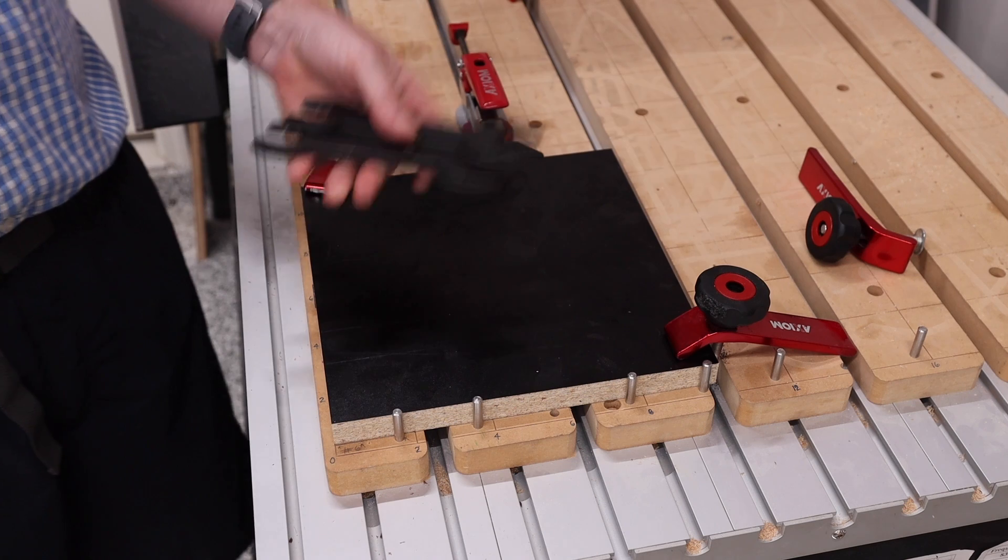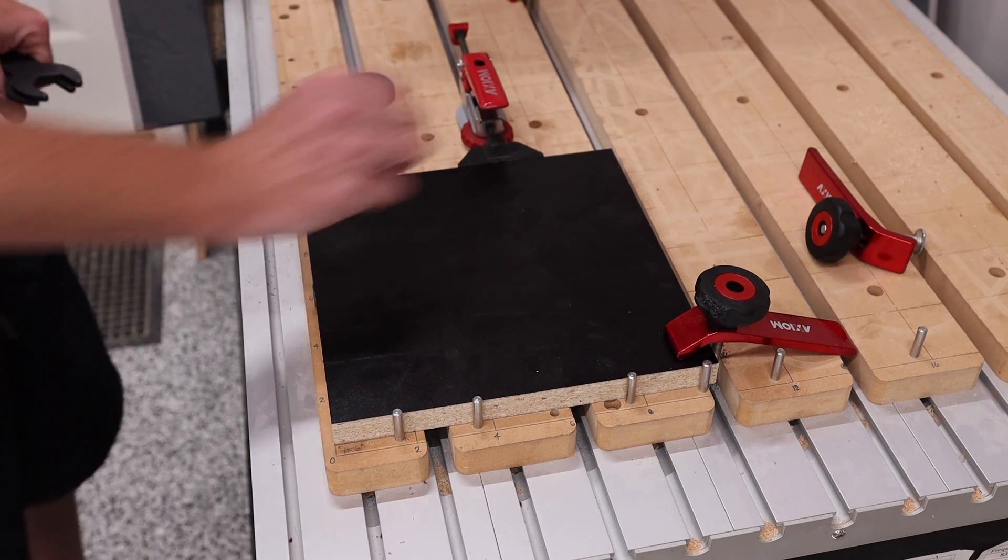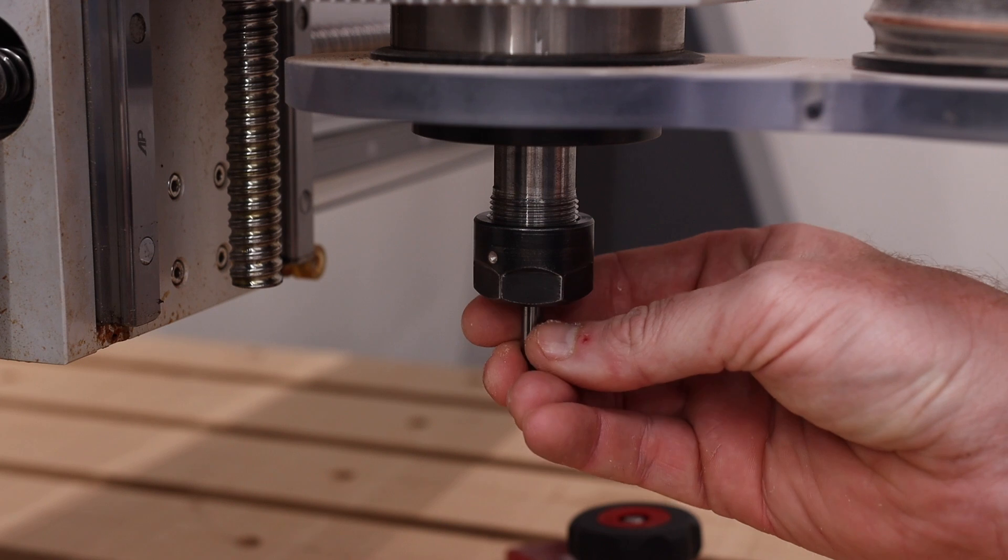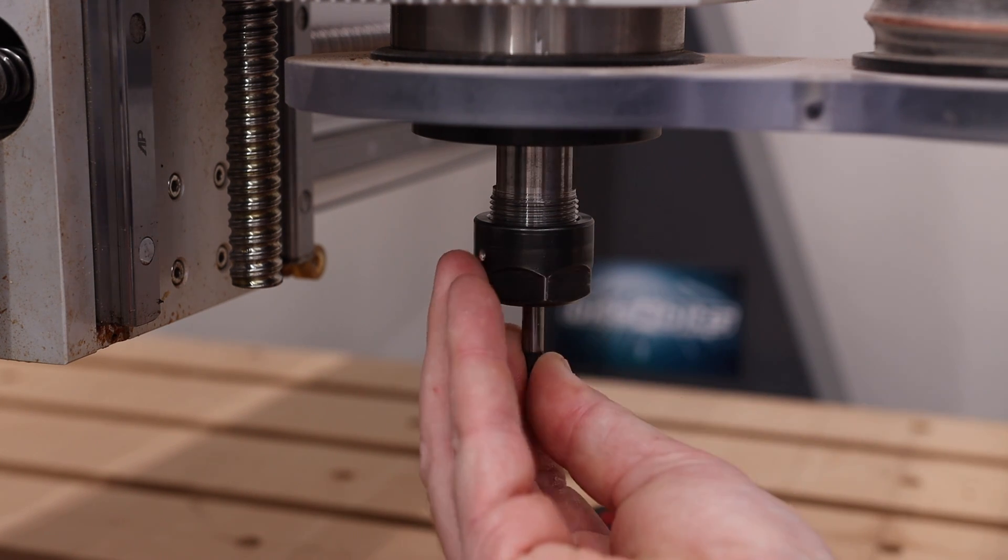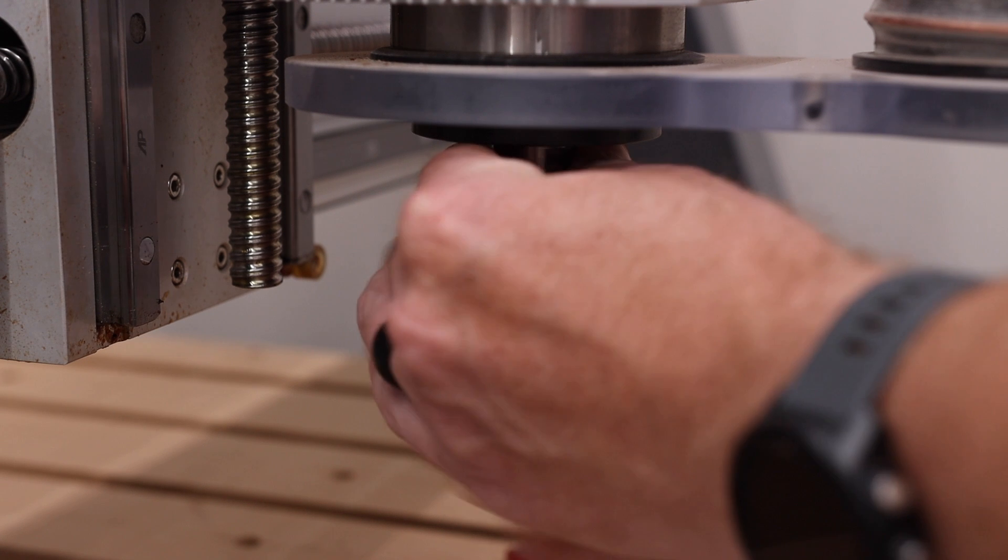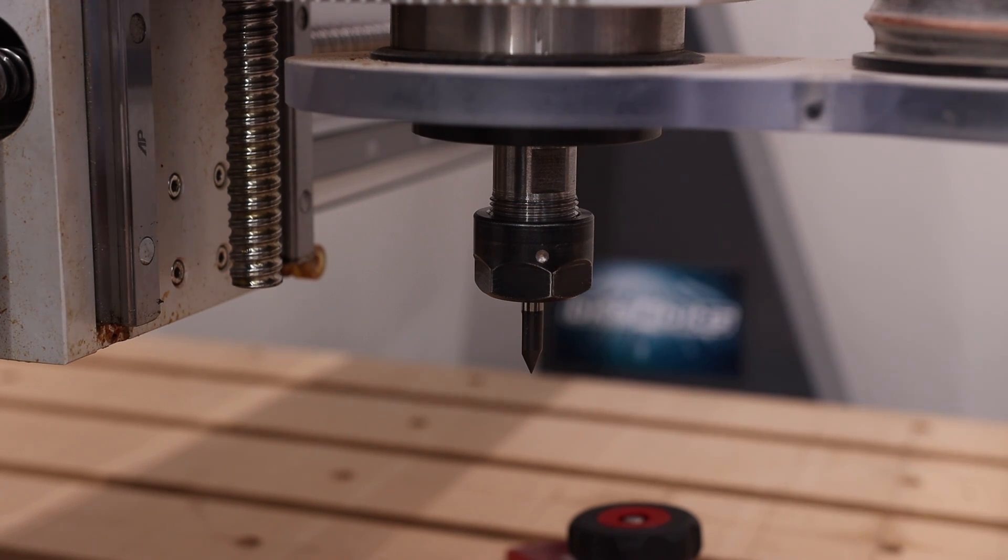So I've got my piece on the CNC machine in the reference point that I want. It's clamped down. Everything is good to go. So the next thing I'm going to do is insert my router bit. As I'm sure you can imagine, placing this router bit into the CNC is just like placing any other router bit that you'd put in any collet or router system. We're just going to tighten that down. There we go. Router bit's nice and tight.